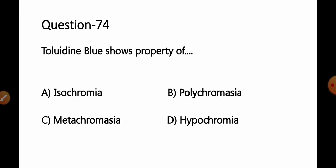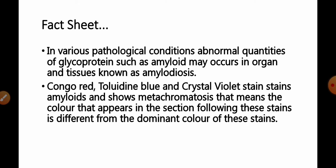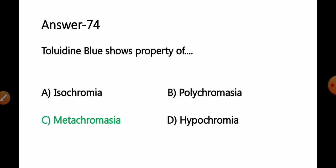Question number 74: Toluidine blue shows the property of — Option A: isochromia; B: polychromasia; C: metachromasia; D: hypochromia. As previously discussed, Congo red, toluidine blue, and crystal violet stain amyloids and show metachromasia — meaning the color that appears in the tissue section following staining is somewhat different from the original color of the stain. So Option C — metachromasia — is the correct answer.